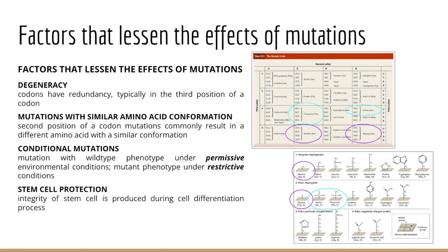Mutations in the second position of a codon often result in replacement of one amino acid for another, but that replacement may involve amino acids sharing similar characteristics. For instance, serine (AGU/AGC) and threonine (ACU/ACC) are both polar or hydrophilic amino acids — the only structural difference being that serine has a hydrogen atom where threonine has a methyl group, so they behave very similarly. The textbook also gives the example of alanine (GCC) and glycine (GGC), which have similar confirmation even if alanine is hydrophobic and glycine is hydrophilic.